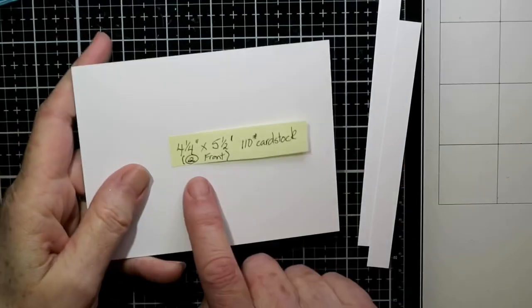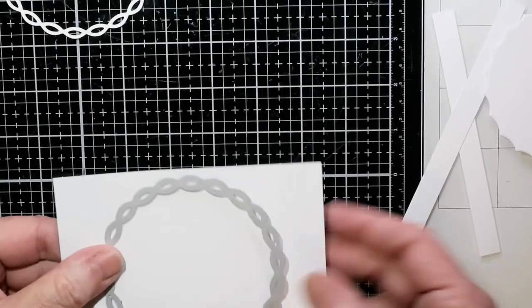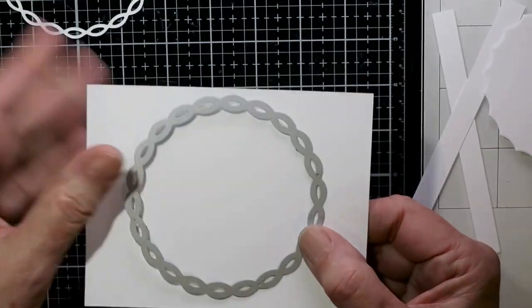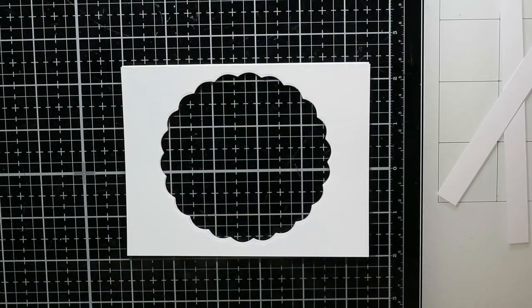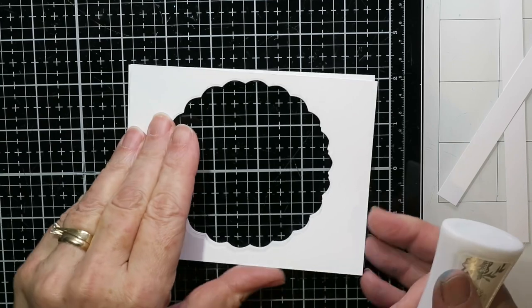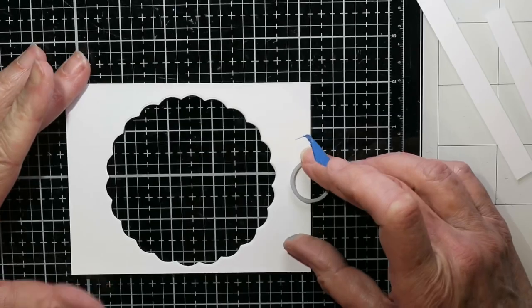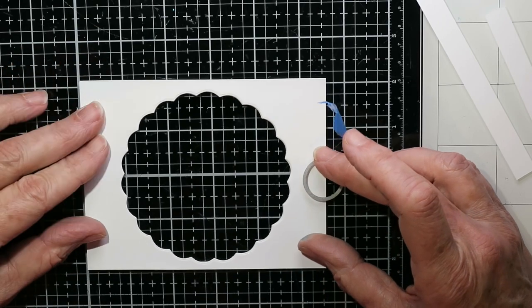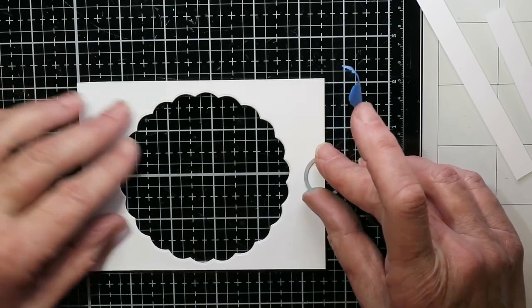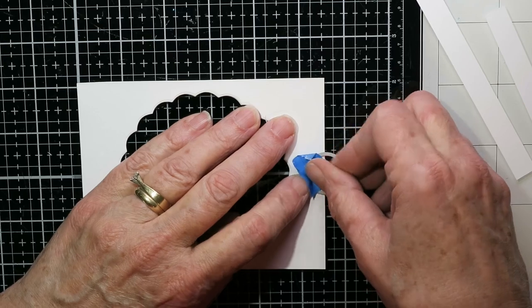So this is the front now. I use 110 pound cardstock and I usually double this up. You are ending up cutting a lot out of this one. And so I just find the sturdier it is, the better. So you can see I've used a die. I used one from MFT to cut a sort of scalloped circle. You can use whatever you want. It could be a rectangle, could be a square, could be a hexagon, whatever you've got to use that.